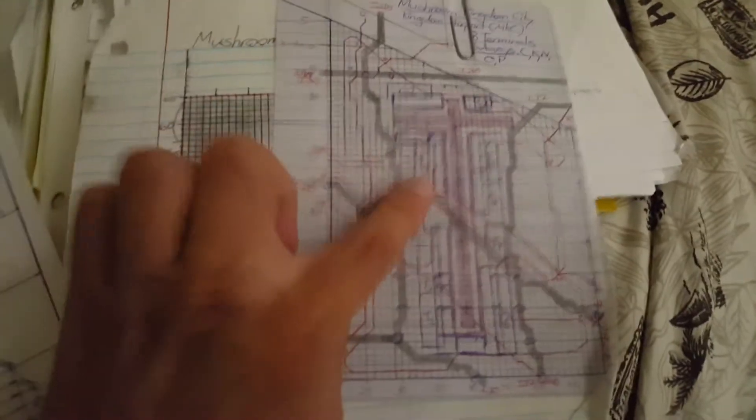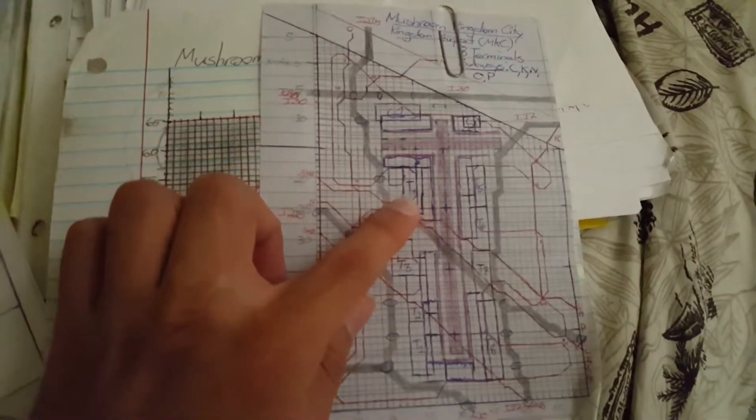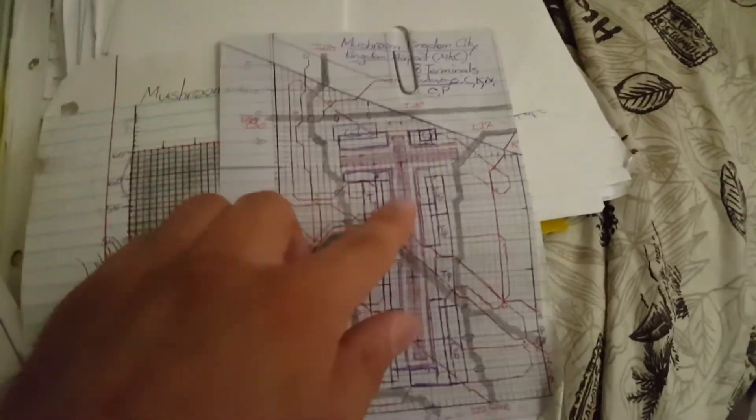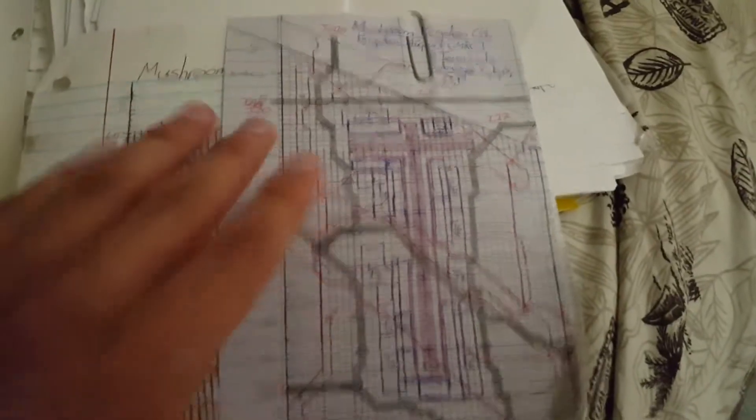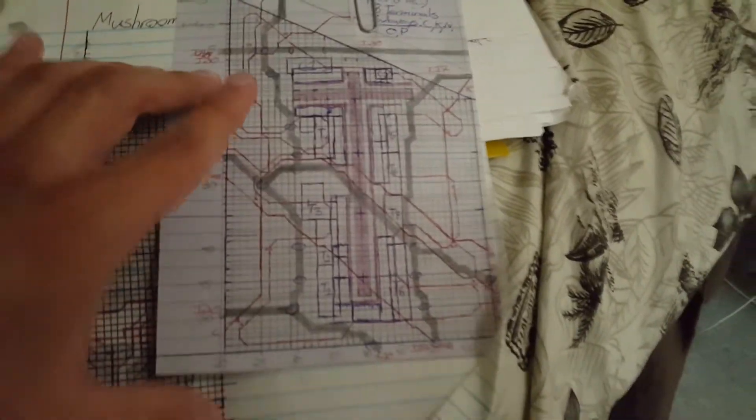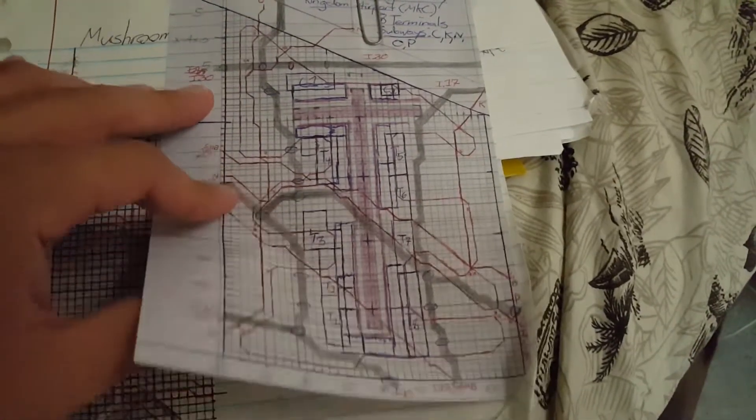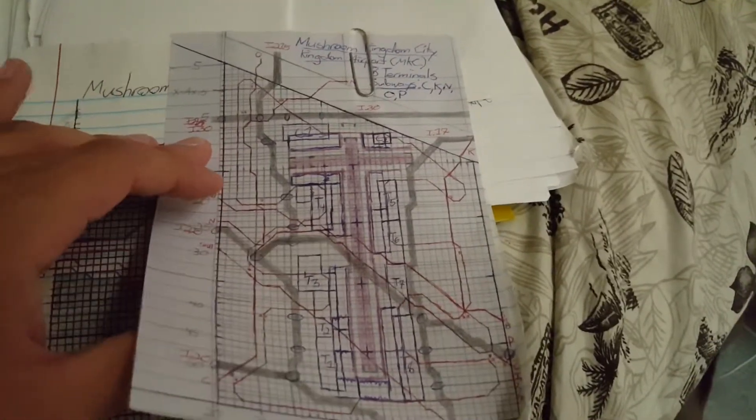This right here, this is Mushroom Kingdom City Airport, or MKC. And of course this does have cross. I don't know why I did it, but it was totally unintentional. And it's got freeways there, it's got some terminals. It's actually not an Inter Kingdom Airport, it's Intra Kingdom Airport.